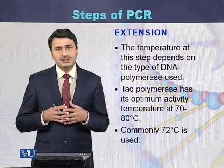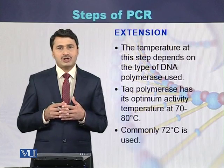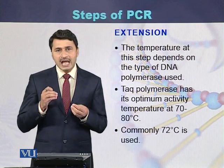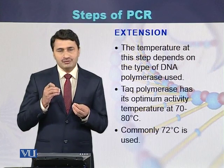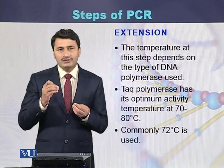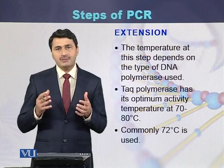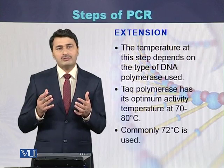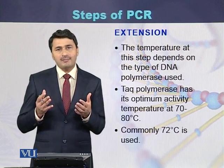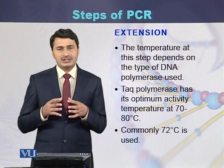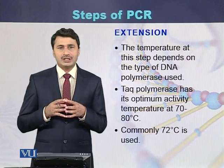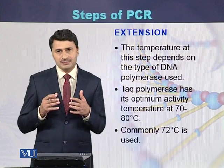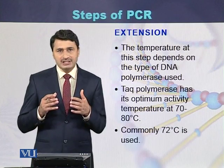The third step of PCR is called extension, or elongation in some literature. During elongation, DNA polymerase adds nucleotides and a new strand is formed that is complementary to the template DNA. The polymerase has optimum activity between 70 and 80 degrees centigrade, but most commonly 72 degrees centigrade is used for optimum DNA polymerase activity.